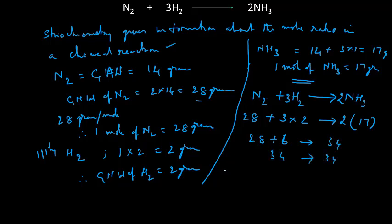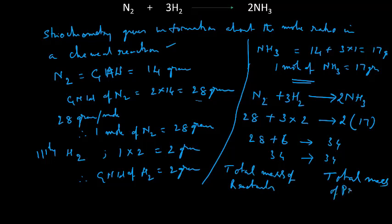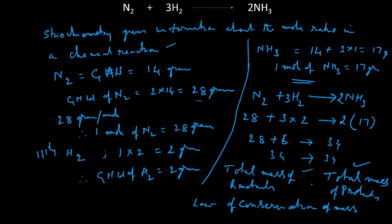Using the balanced equation N₂ + 3H₂ → 2NH₃: total mass of reactants = 28 + 3×2 = 28 + 6 = 34 g; total mass of products = 2×17 = 34 g. So total mass of reactants equals total mass of products — this is the law of conservation of mass verified through stoichiometry.